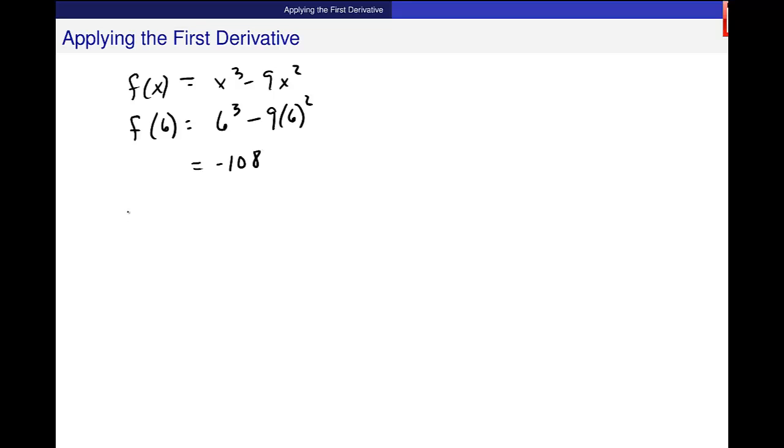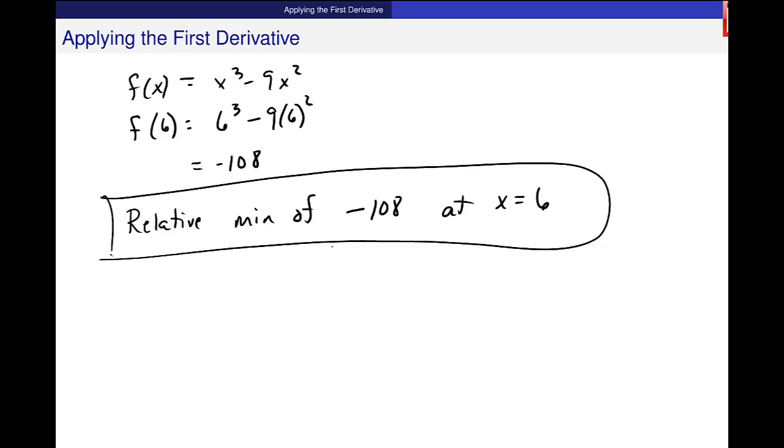And the result for this, I have a relative minimum of negative 108, the output value, at x is equal to 6. And the maximum too. Max of 0 at x equal to 0. Both of those should be part of this solution. Let me know if you have any questions, but that's how we find relative extrema using the first derivative test.